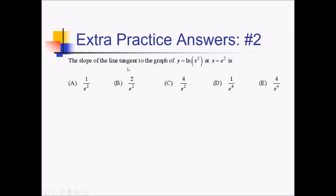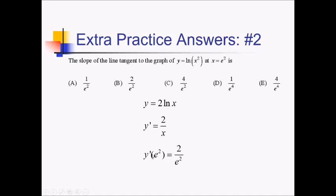On this problem, they want the slope of the line tangent to ln of x squared at x equals e squared. We need to first take the derivative of this y function and then plug e squared into it. To make our lives a little bit easier, I'm just going to use the pop-out rule to pop this exponent of 2 out in front of the log. Now that's a much quicker derivative to take — y prime is just going to be 2 over x. And y prime of e squared is just 2 over e squared, which gives us answer choice B.